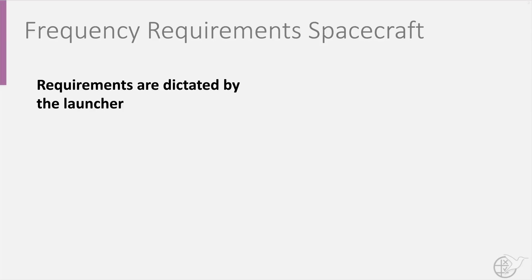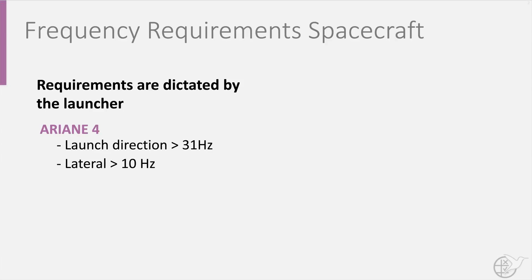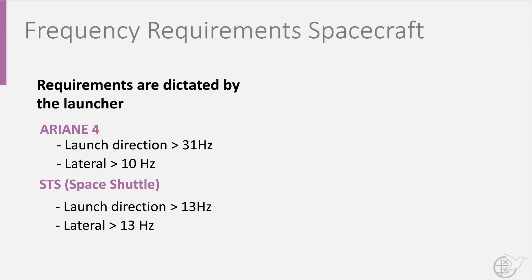One of the requirements specified are the natural frequencies in axial and lateral direction. For example, the minimum natural frequency of the Ariane 4 launcher is 31 Hz in launch direction and 10 Hz in lateral direction. For the Space Shuttle, they are each 13 Hz.